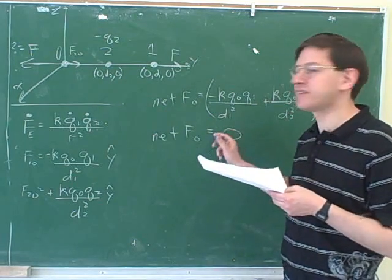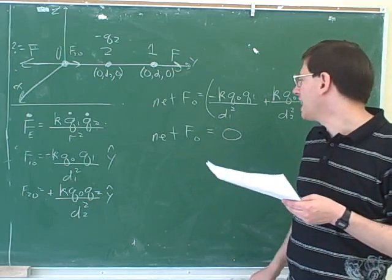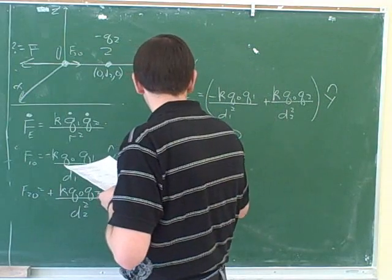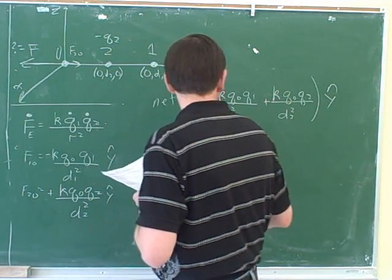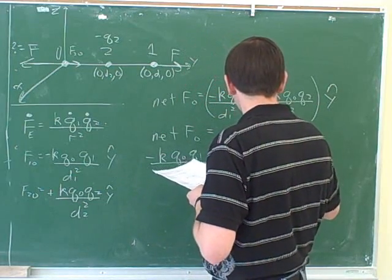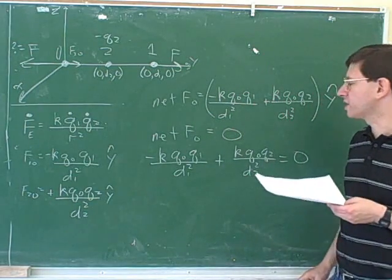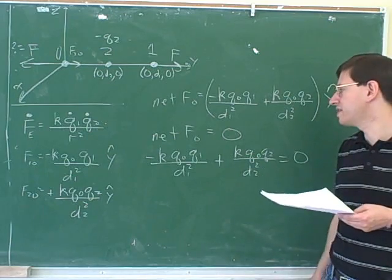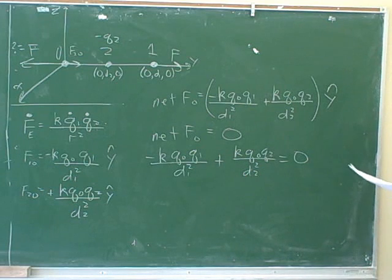Zero. Correct. So this is the place to start. We should start by taking the information we're given — that there's zero net force. Now we can plug in this big expression: negative k q0 q1 over d1 squared plus k q0 q2. We shouldn't ignore the signs — we need to include the signs in our expression for net force. When they said they wanted the net force to be zero, that means they want this complicated expression to come out to be zero. Now we have some algebra to slog through.